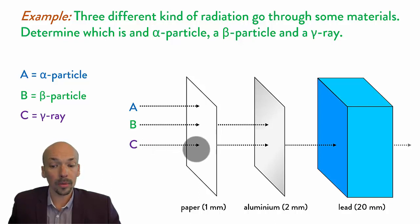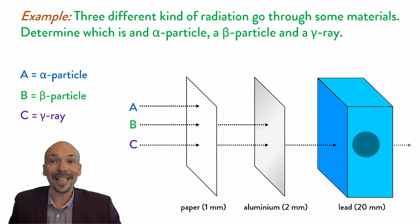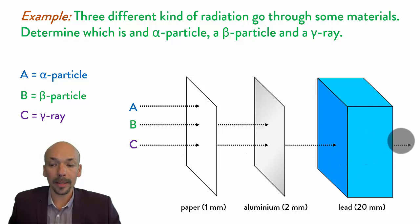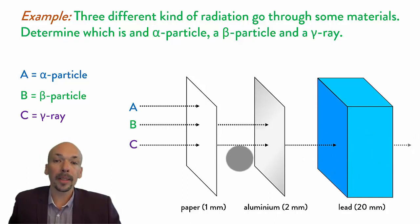As you can see, the gamma ray goes through paper, it goes through aluminum, it even goes through lead. The intensity is a little bit less, as you can see, but gamma rays are highly penetrating.